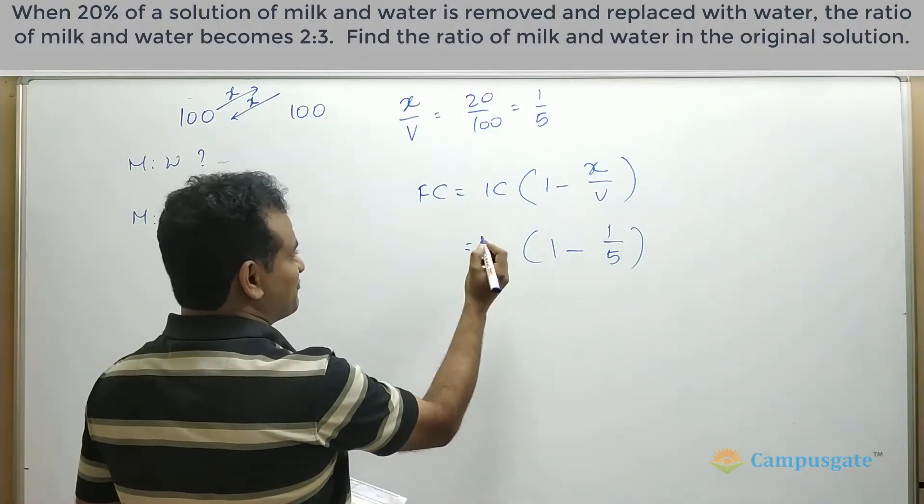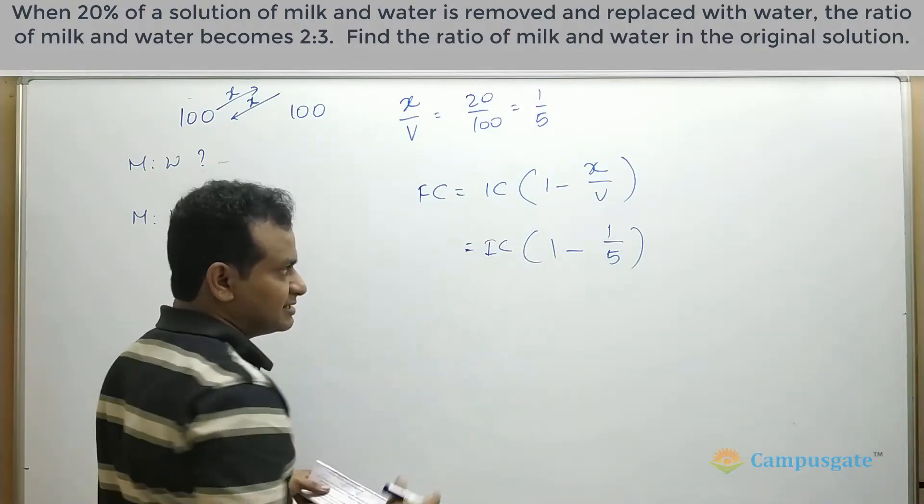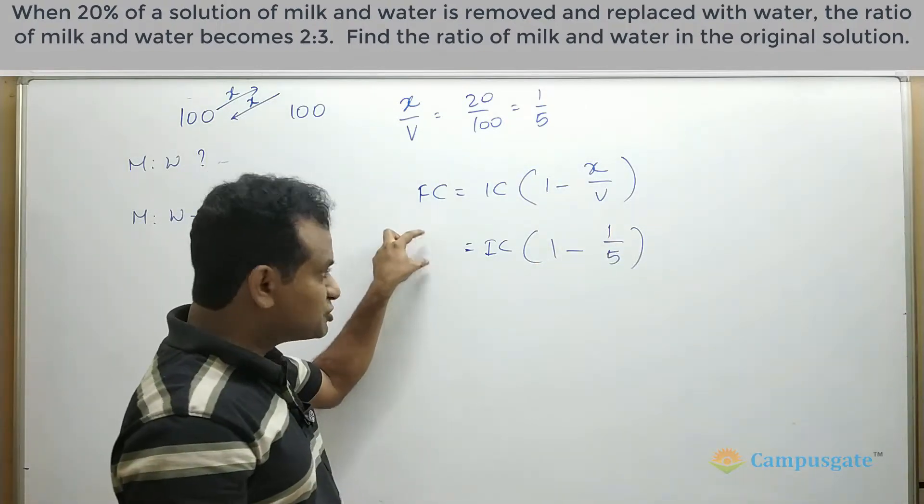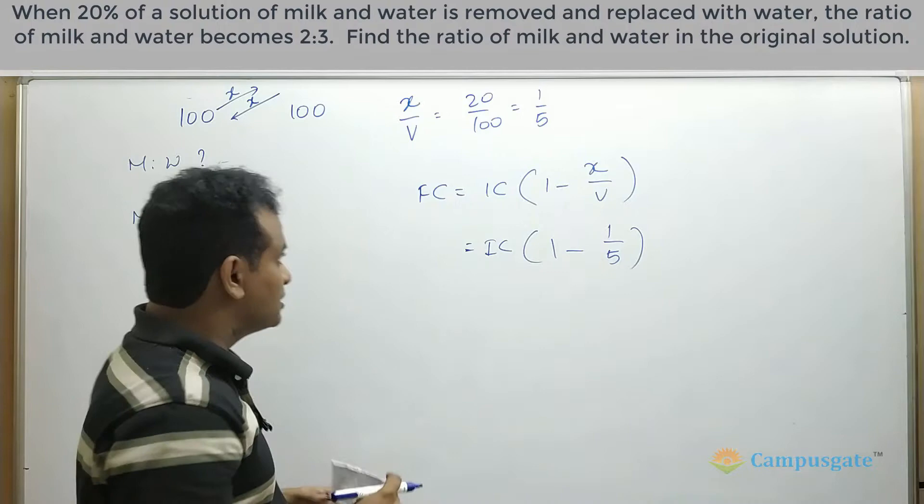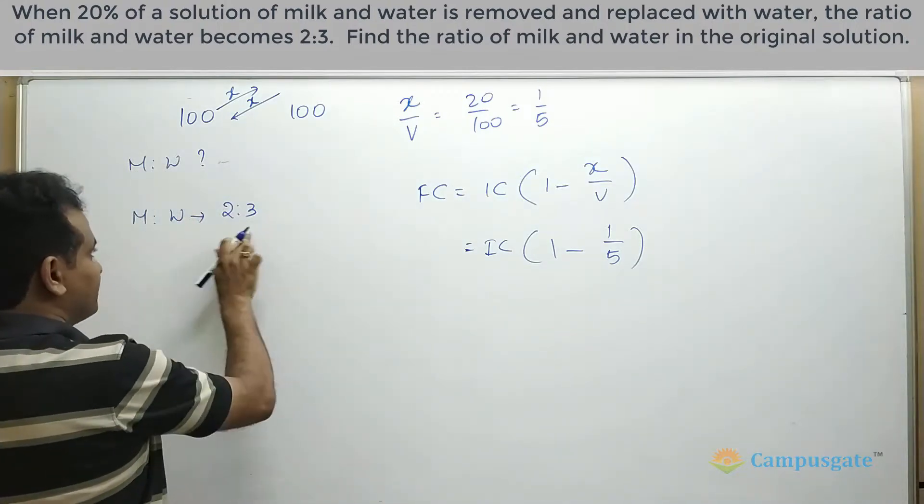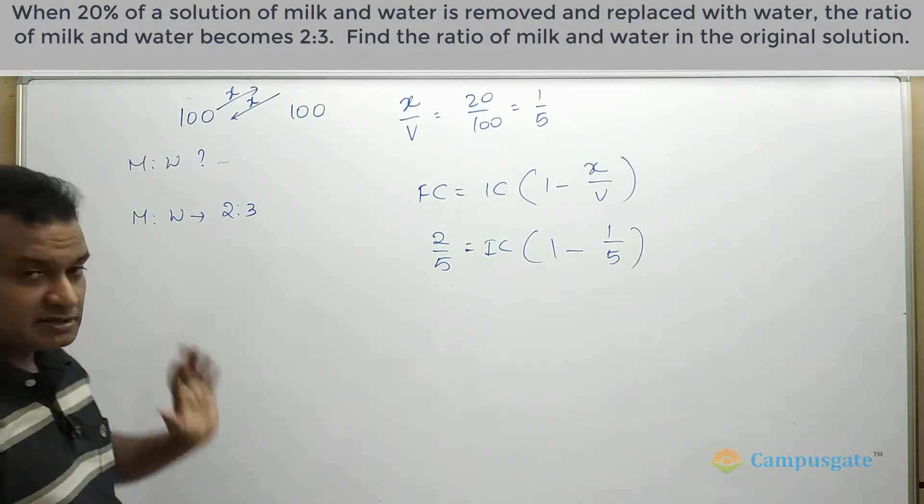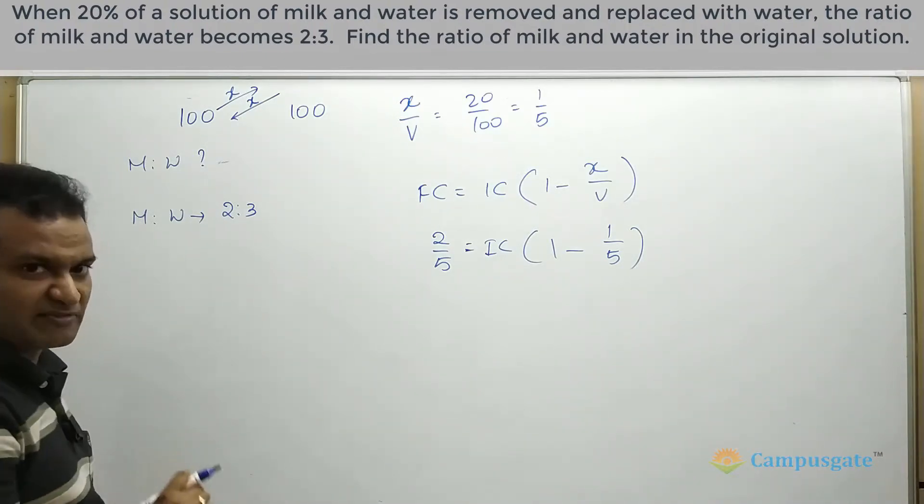Now, what is initial concentration? That we need to find out. Just keep it as IC. And we are adding pure component water to it. Here we need to put milk concentration. So what is the milk concentration? Finally, 2 by 5. This is the proportion we need to put here. So don't put 2 by 3. Put the milk proportion 2 by 5.